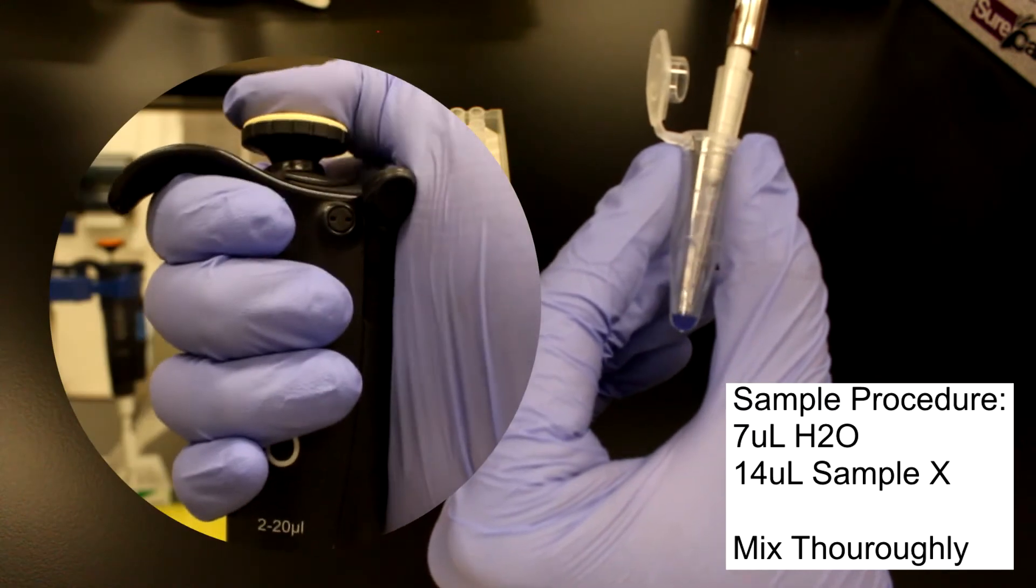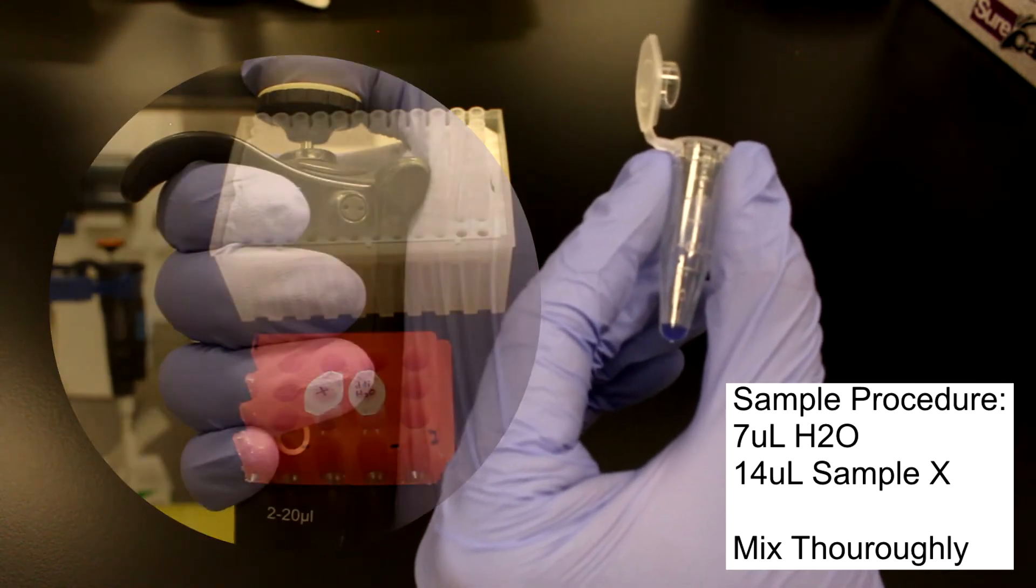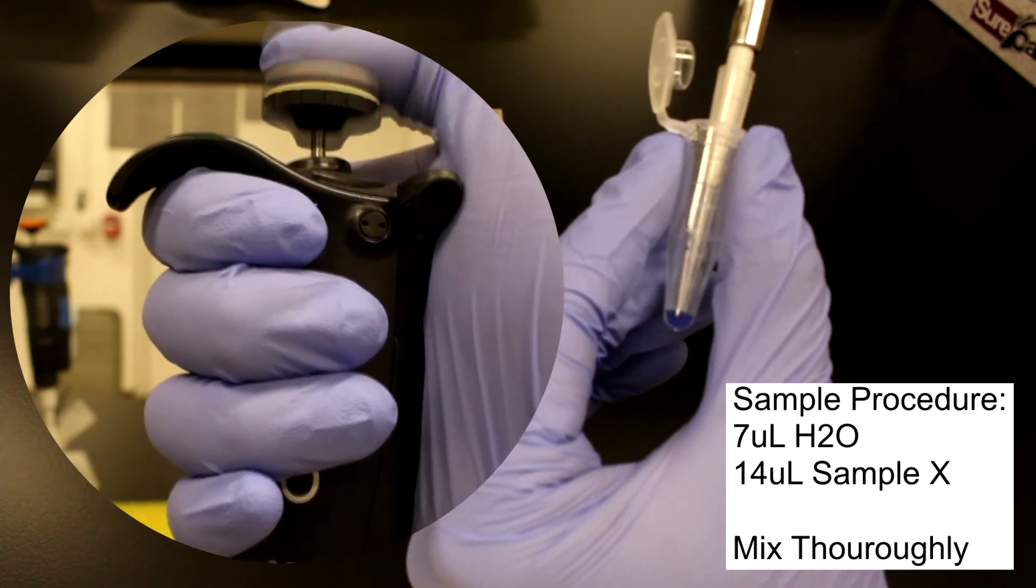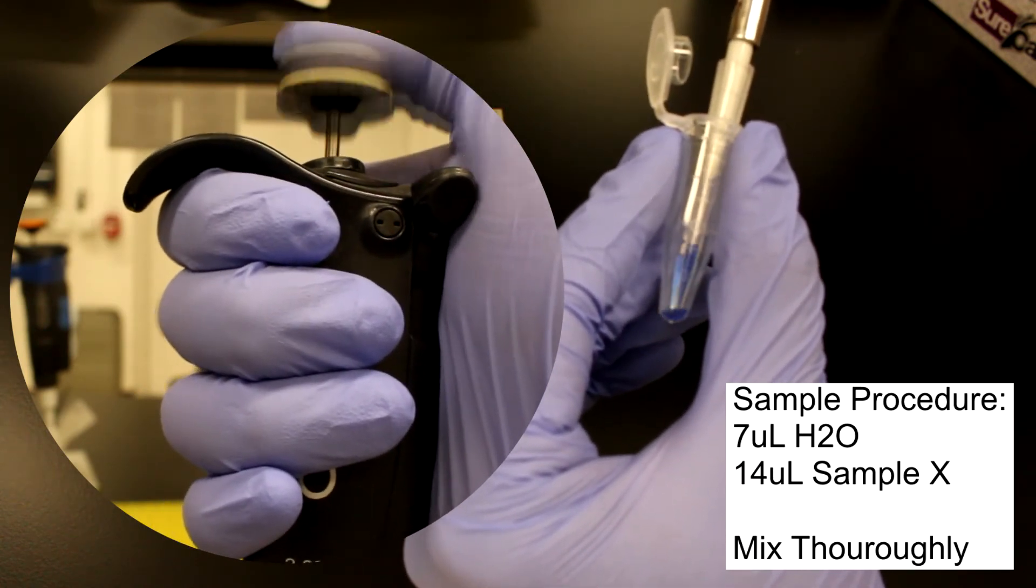To mix, the sample can be vortexed and centrifuged, or using the pipette by pipetting up and down, taking care to pipette only liquid as some samples may degrade if bubbles are introduced.